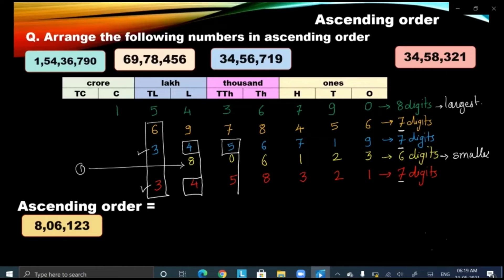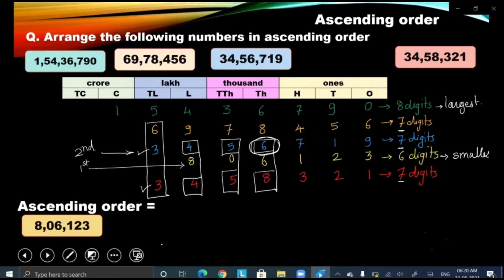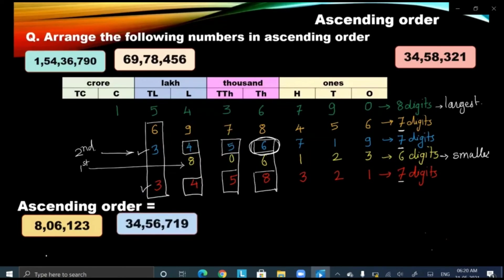Since the lakh column has the same digits, we go to the 10,000 column. In the 10,000 column we again got five and five, the same number. So we go to the thousands column. In the thousands column we got six and eight. Between six and eight, six is the smaller number, and the number which contains six is the second place number. Let us put that number in second place in the answer.